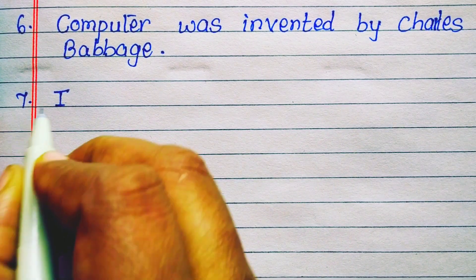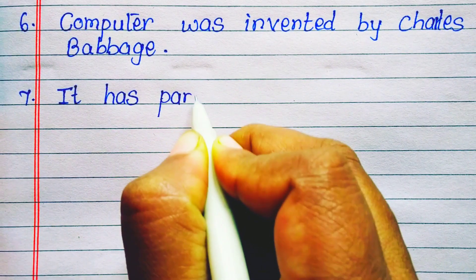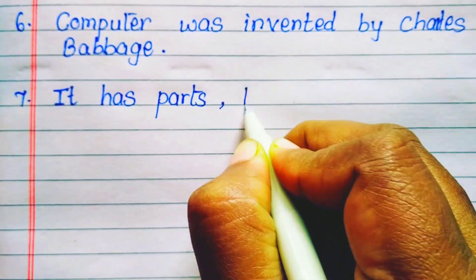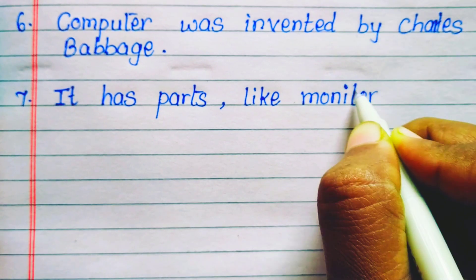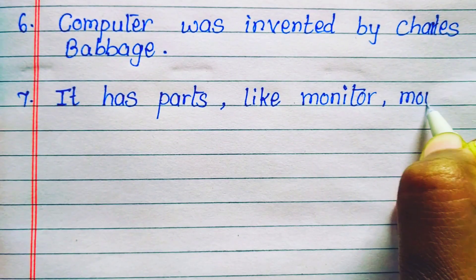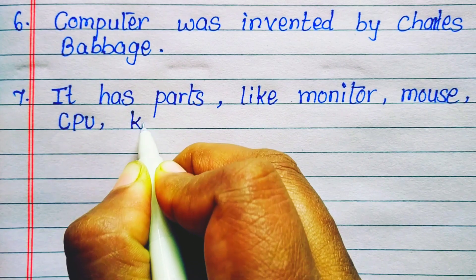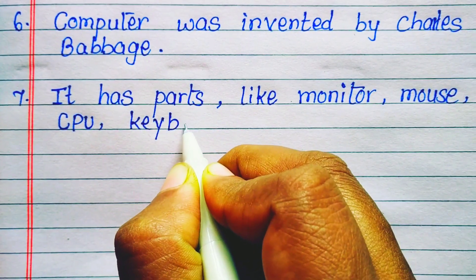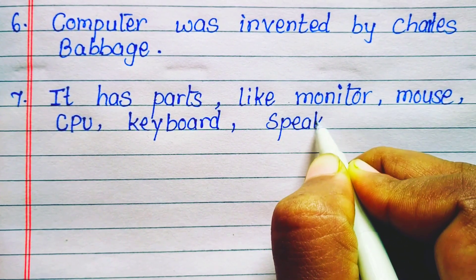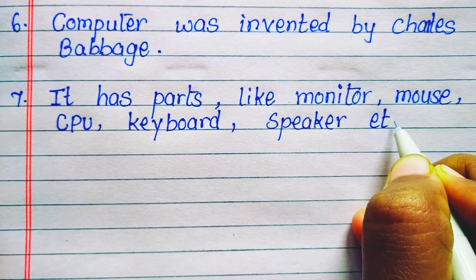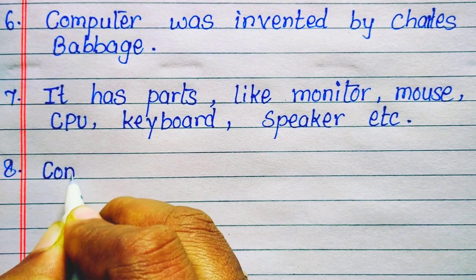Seventh line: It has parts like monitor, mouse, CPU, keyboard, speaker, etc.